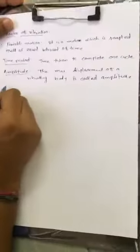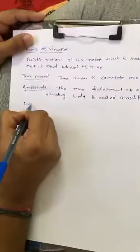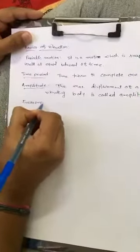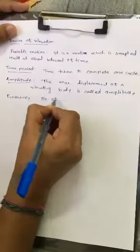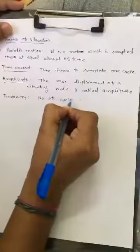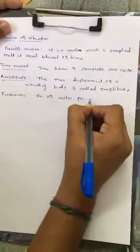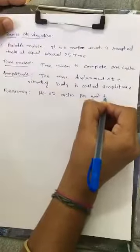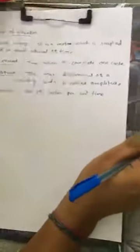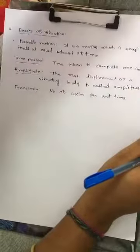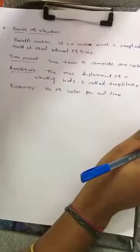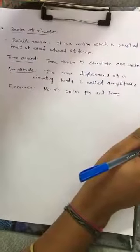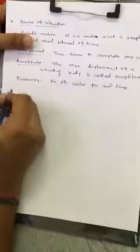The basic main terms are amplitude and frequency. Frequency is the number of cycles per unit time. When discussing frequency in vibration, there is a type called natural frequency.